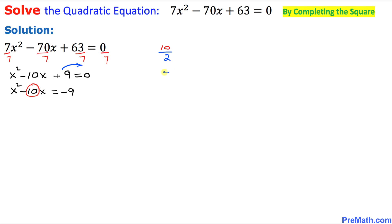So that is going to give us 5 and then we are going to square this number. So whatever this number we got, we are going to add this number on both sides of this equation. Let's go ahead and do that.